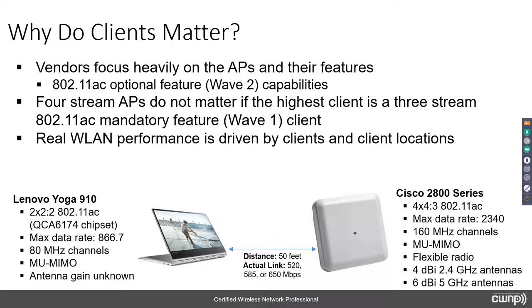The Cisco 2800 series AP is 4x4 with three spatial streams. The nomenclature is four transmit by four receive, then the number of streams after the colon. The max data rate based on a 160 MHz channel is 2340 Mbps. It is multi-user MIMO capable, has a flexible radio allowing dual 5 GHz operation, four dBi 2.4 GHz antennas, and six dBi 5 GHz antennas — a nice touch given that 5 GHz signals are harder to receive at higher data-rate SNR thresholds.